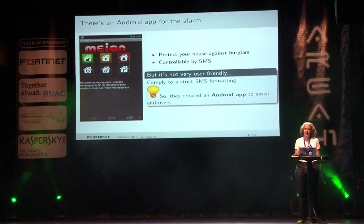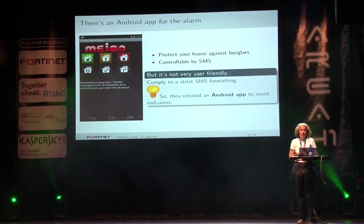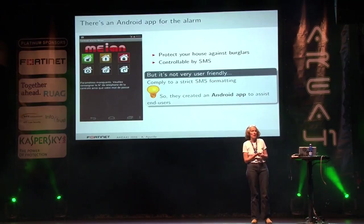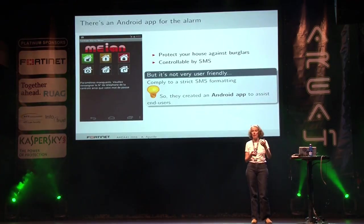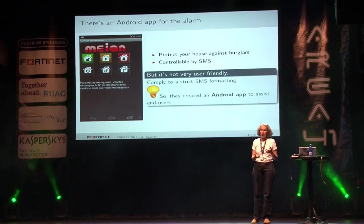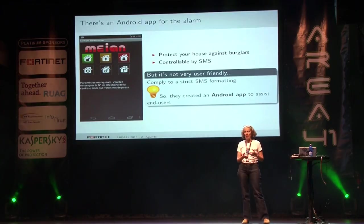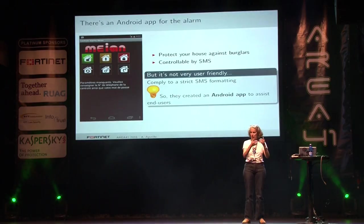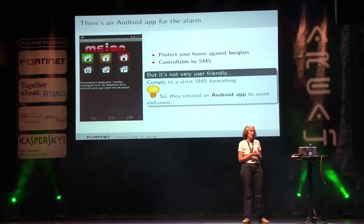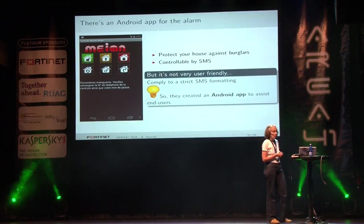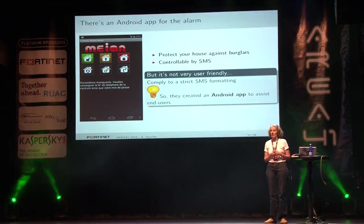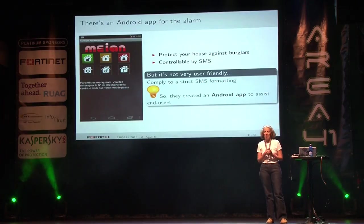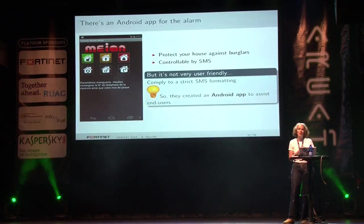Now let's head to the home safety alarm. The goal is to protect your house against burglars. Like many home safety alarms now, it's controllable by SMS — you type an SMS in a strict format, send your password, and it sets the alarm on or off. Because the format is very strict — forget a semicolon and it won't work — the manufacturer thought it would be a good idea to implement an Android application to make it more usable, with a simple red or green button interface.